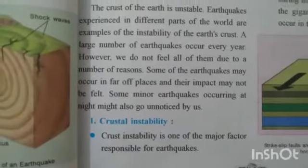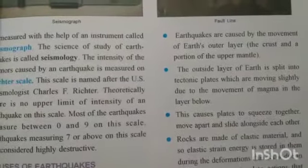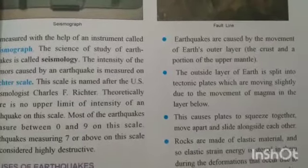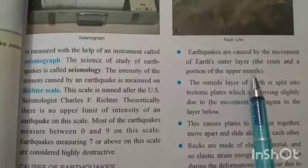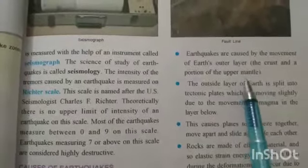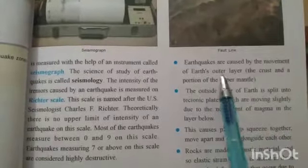Crustal instability is one of the major factors responsible for earthquakes. Earthquakes are caused by the movement of the earth's outer layer — the crust — and a portion of the upper mantle. The crust is a solid layer, while the mantle, due to high temperature and pressure, is in a semi-liquid or liquid form, causing the crust to float on it.